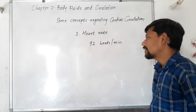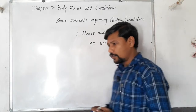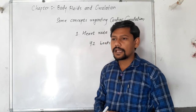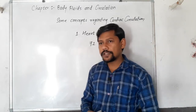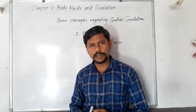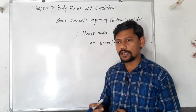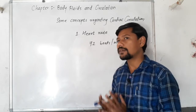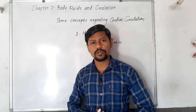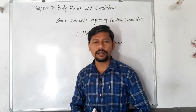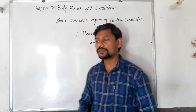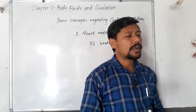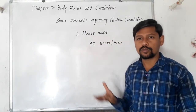If I am running or doing any rapid activities — suppose running or another exercise — the heart rate can increase above 72 beats per minute. But when we are in a sleeping position, we can see the heart rate reduce below 72 beats per minute.